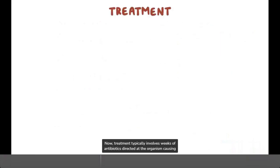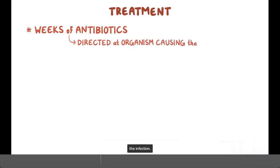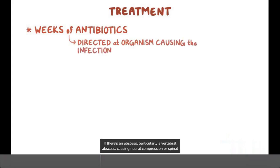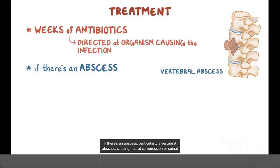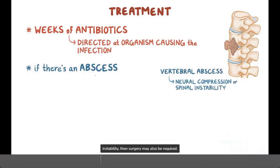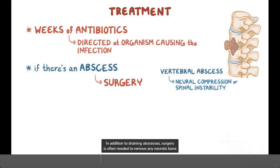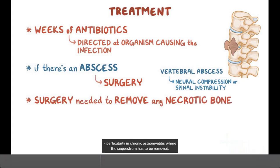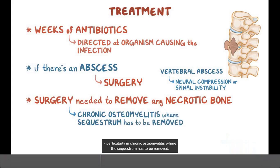Treatment typically involves weeks of antibiotics directed at the organism causing the infection. If there's an abscess — particularly a vertebral abscess causing neural compression or spinal instability — then surgery may also be required. In addition to draining abscesses, surgery is often needed to remove any necrotic bone, particularly in chronic osteomyelitis where the sequestrum has to be removed.